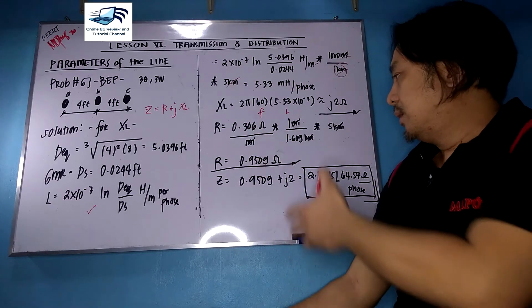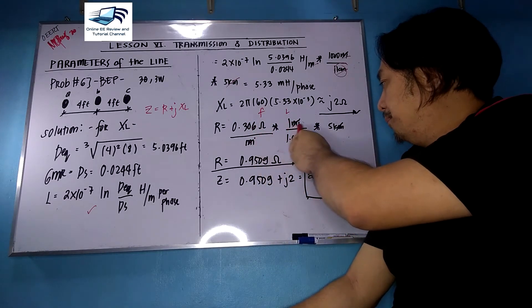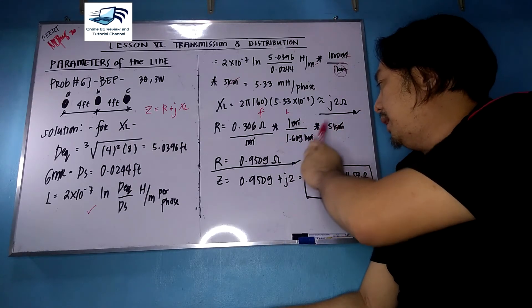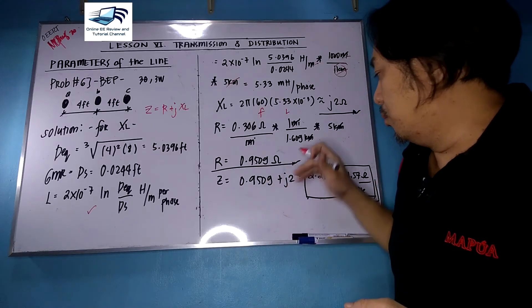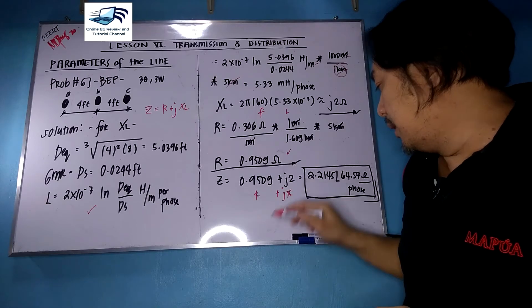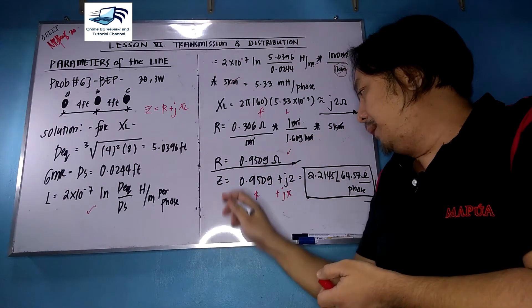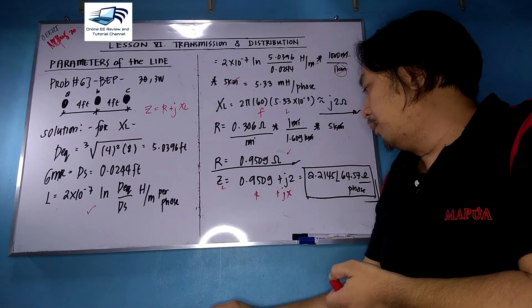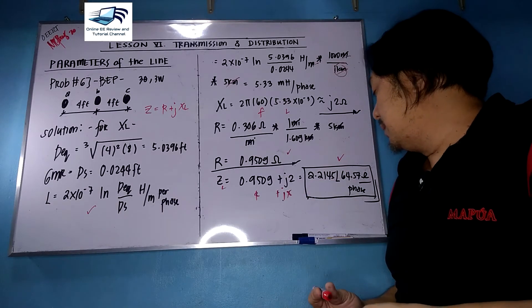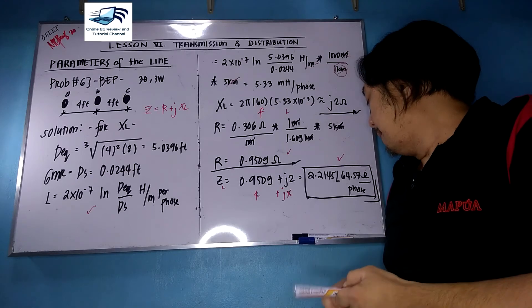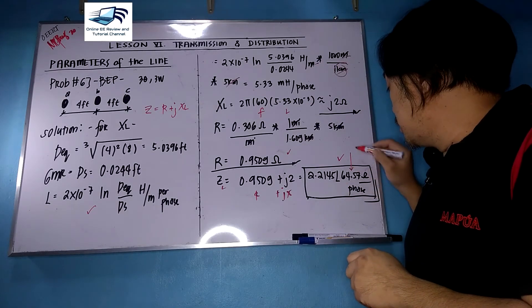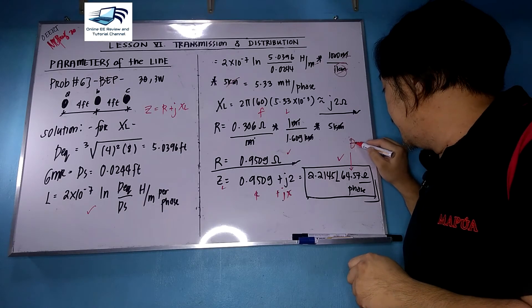For resistance in ohmic value: 0.306 ohms per mile, converted using 1.609 kilometers per mile and five kilometers of line length, gives 0.95 ohms. The series impedance is 0.9509 plus j2 ohms, or in polar form: 2.2145 at angle 64.57 degrees ohms — and as usual, this angle is the power factor angle theta.